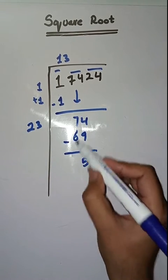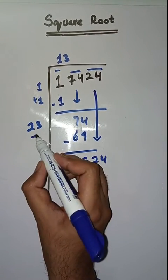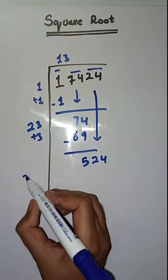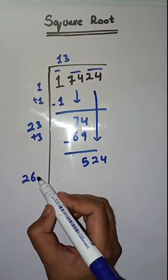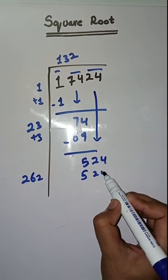Next pair is 24, isko bhi ham niche lehenge. Now we will do 23 plus 3 which is equal to 26. Now we will take our number 2. 262, two twos are 524. So it completely solved.